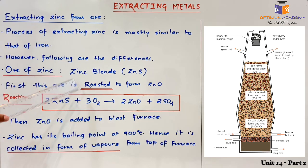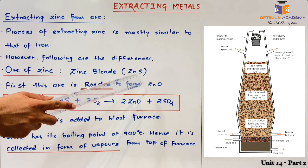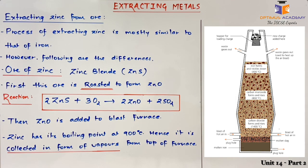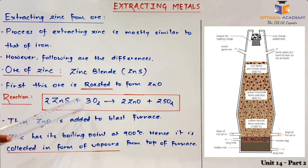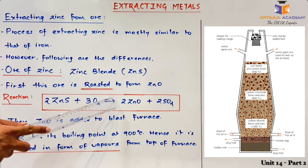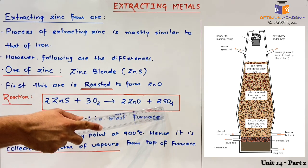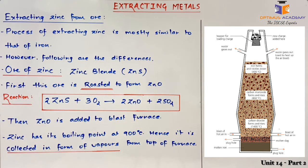To convert zinc sulfide to zinc oxide, we roast zinc in air — a process known as roasting. Zinc sulfide is reacted with oxygen at high temperature so that it forms zinc oxide and sulfur dioxide.